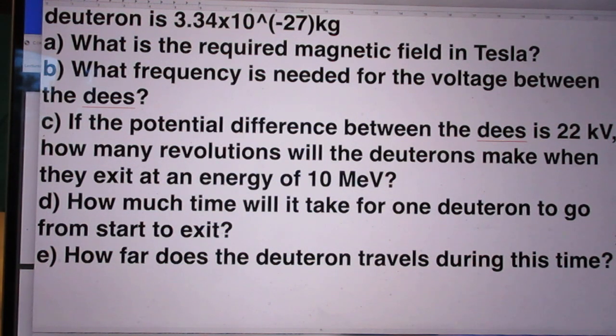Fourth question. How much time will it take for one deuteron to go from start to exit? Last question. How far does the deuteron travel during this time?